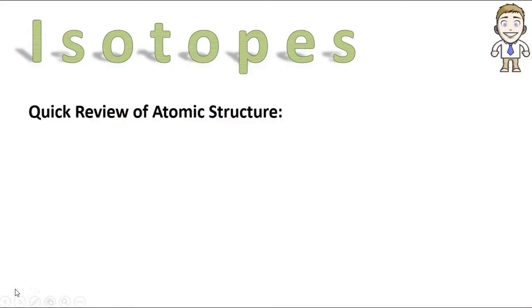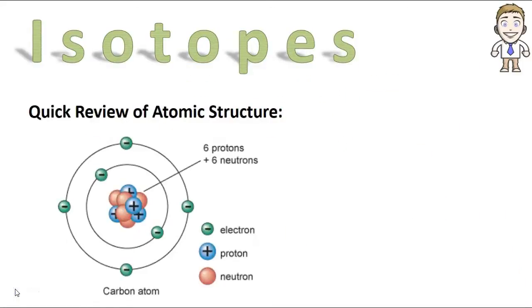Let's start off with a quick review of atomic structure and some things you should probably already know about atoms. First of all, in the middle of an atom is a nucleus containing protons and neutrons. Protons and neutrons, by the way, have equal masses at what we call one atomic mass unit or one AMU.